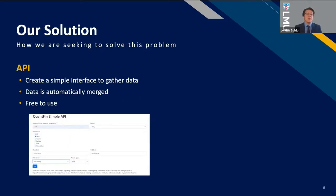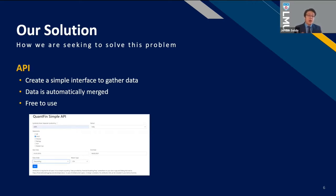Let's begin with our first solution: we created an API. Imagine you're a tech person, but not a finance person, but you can work with data — our API allows you to gain access to that data. Additionally, we created a simple website that interfaces with our API to allow individuals who are not tech-savvy, who are used to just using Excel spreadsheets, to get data that's automatically merged, clean, and free to use. This free part is important because many websites charge a fee to download income statements and balance sheets, but we want to provide that data to our users for free.